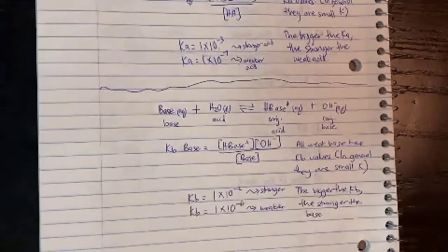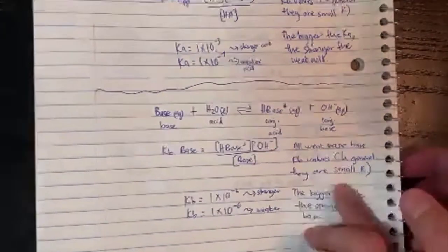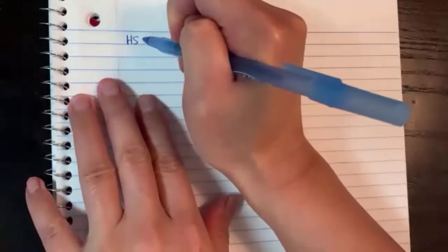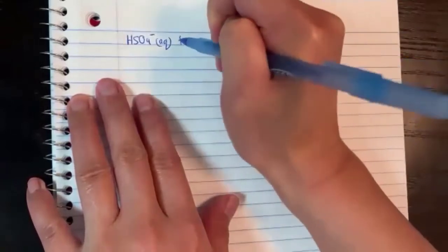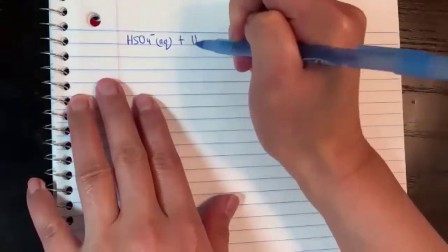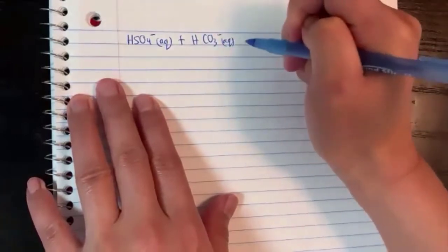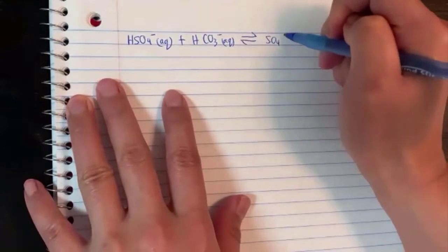We are going to talk about water today, but before that, with this whole acid and base equation stuff, I have one I wanted to show you. If I wrote something like this here, can you tell me which one's the acid and which one's the base? This one is written without water. Can you still tell who gained a proton and who lost a proton?